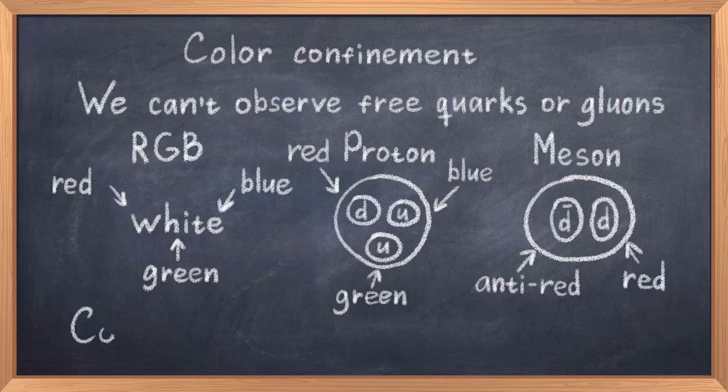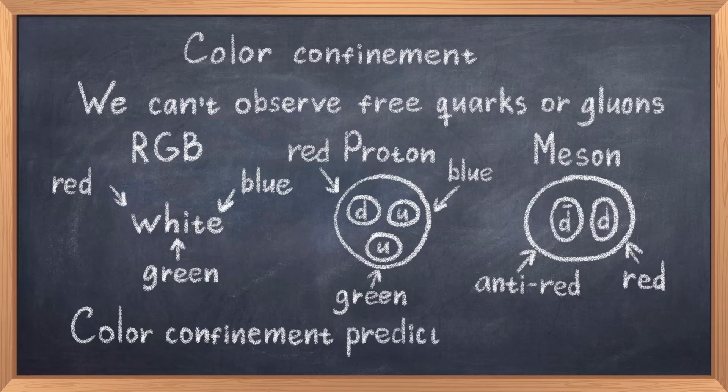Since gluons are also colored, they are also not free to move even though they are technically massless and without confinement they would be just like photons. The confinement of gluons lead to the prediction of glue balls, which are particles composed of gluons. They have however not been detected yet, possibly due to the fact that they are really hard to identify in experiments.